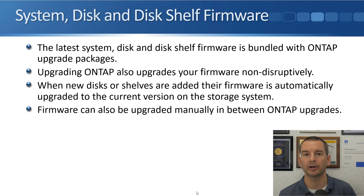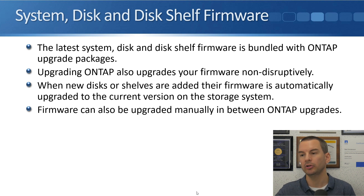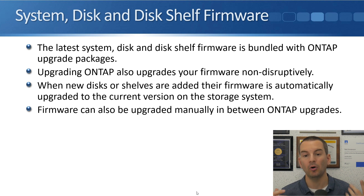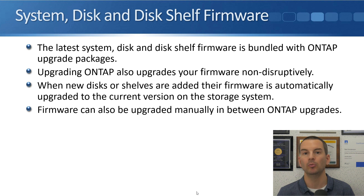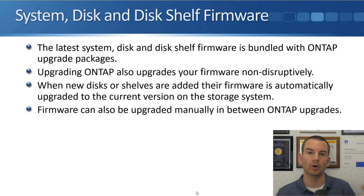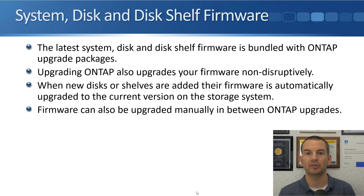The last thing to cover is firmware. There is system firmware on the motherboard, disk firmware, and disk shelf firmware. The latest system, disk, and disk shelf firmware is bundled with the ONTAP upgrade packages — so when you download a new version of ONTAP, it includes the firmware as well, all in one file. Upgrading ONTAP also upgrades your firmware non-disruptively at the same time. When new disks or shelves are added, their firmware is automatically upgraded to the current version on the storage system. You can also upgrade firmware manually in between ONTAP upgrades if, for example, there is a bug fix for your particular disk model.